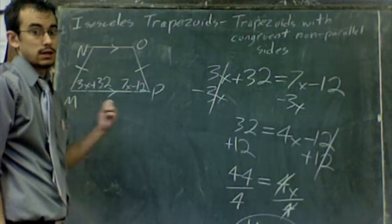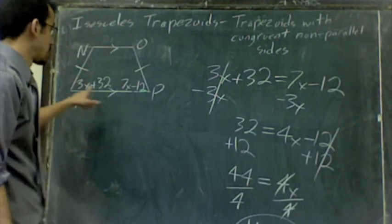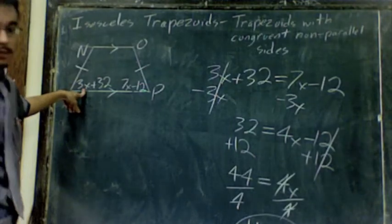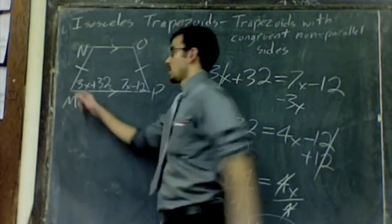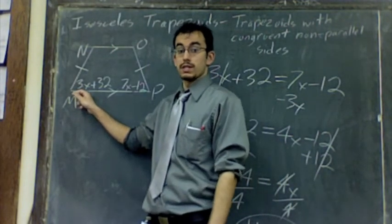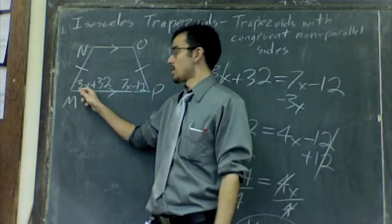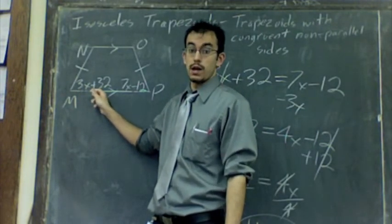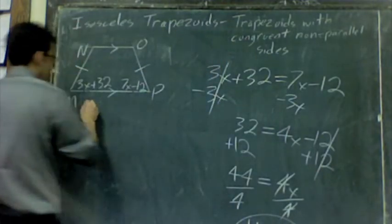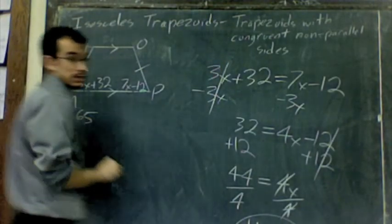So we know that X is 11. Every time you find out what X is, plug it back in. In this case, angle M. Angle M, 3 times X or 3 times 11 is 33. 33 plus 32, that's 65. So angle M is 65 degrees.